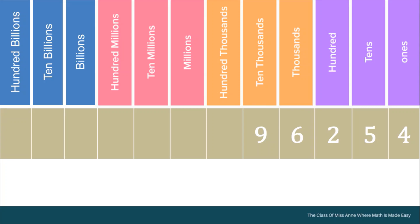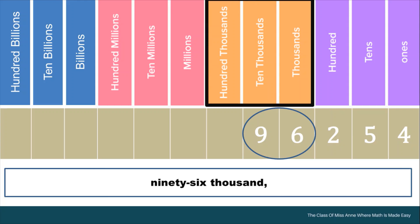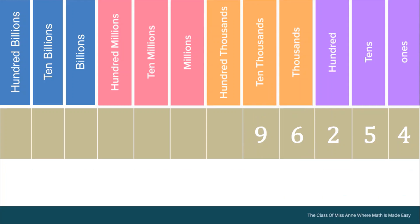How do we read numbers? Let's say we have this example. We read numbers by period from left to right. So in this one, we read 96 and mention its period. So that is 96,000. And read the numbers in the ones period. So that is 254.